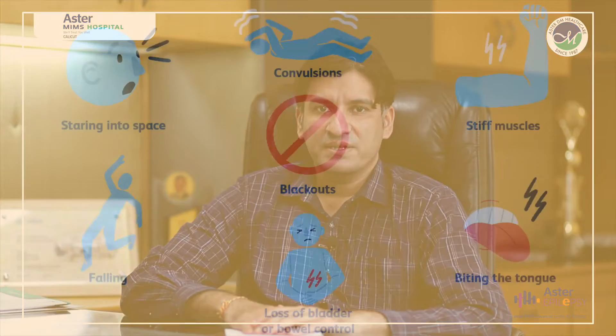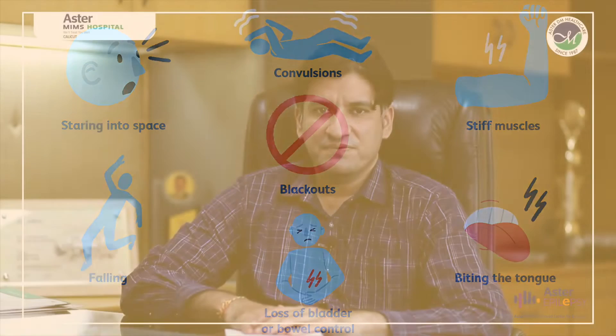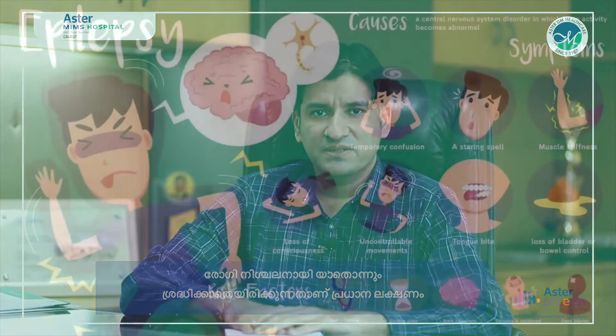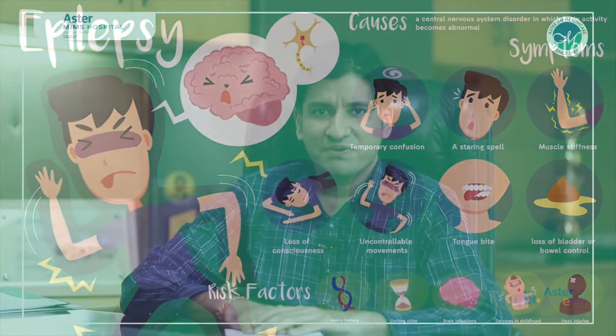Some patients commonly have jerking of the limbs, they fall down, they can have tongue bite, eyes going upwards, and salivation from the mouth. Other patients can manifest differently — some have loss of memory, some have change in behavior, some have abnormal feeling in one part of the body, and some have visual disturbances. The seizure symptoms can vary depending on where in the brain the short circuitry starts and where it spreads.